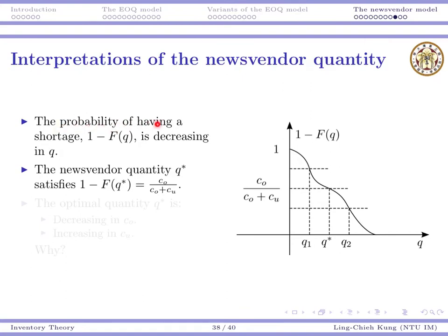So the probability of having a shortage, 1 minus F(Q) is decreasing in Q. When you order more, the probability for you to have shortage will decrease. Also, we know the newsvendor quantity Q star satisfies this. So given the probability, I can go right and find the intersection with the function here to get our Q star.